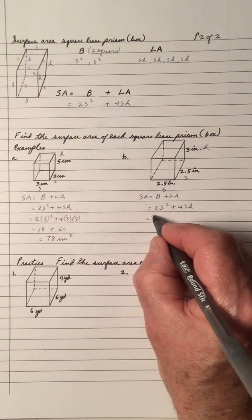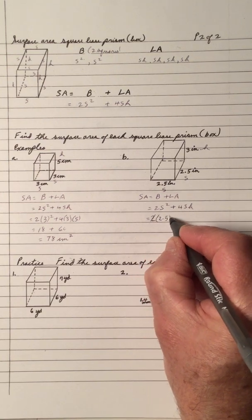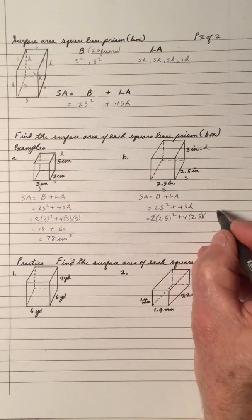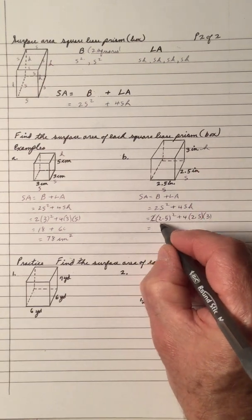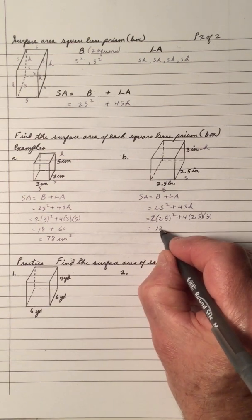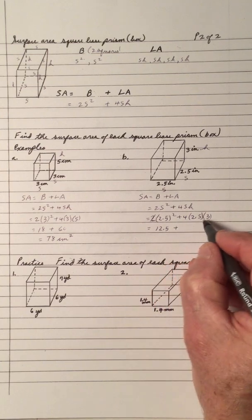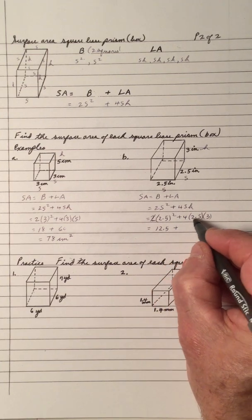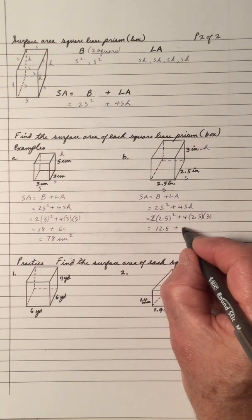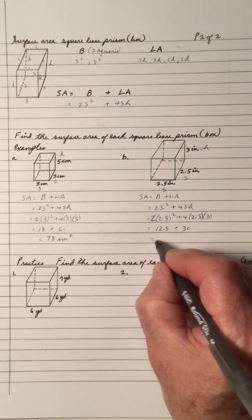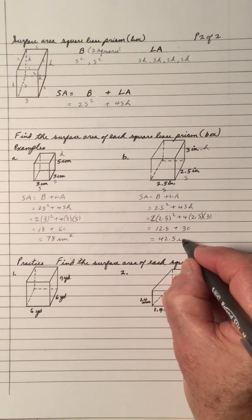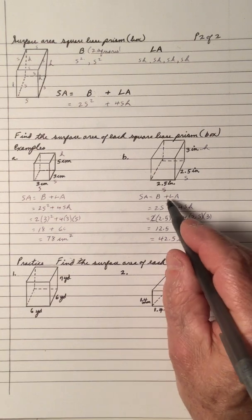So it's 2 times 2.5 squared, 4 times 2.5 times the height of 3. When you multiply that, 2.5 squared times 2 with a calculator, you get 12.5. And 4 times 2.5 times 3, that's 10 times 3 is 30. If you add it up, you get 42.5. And again, we're dealing with area, so it's square inches.